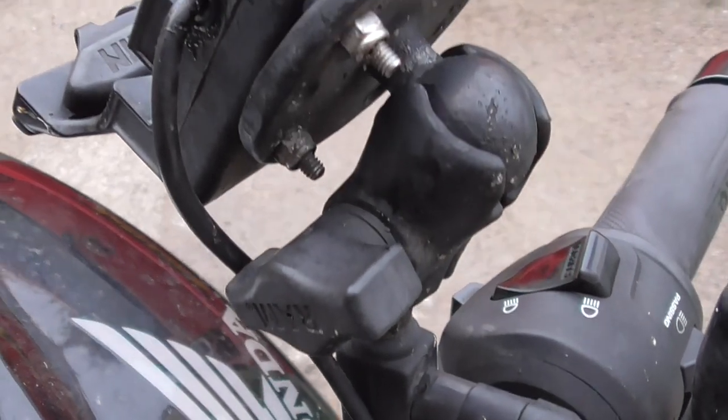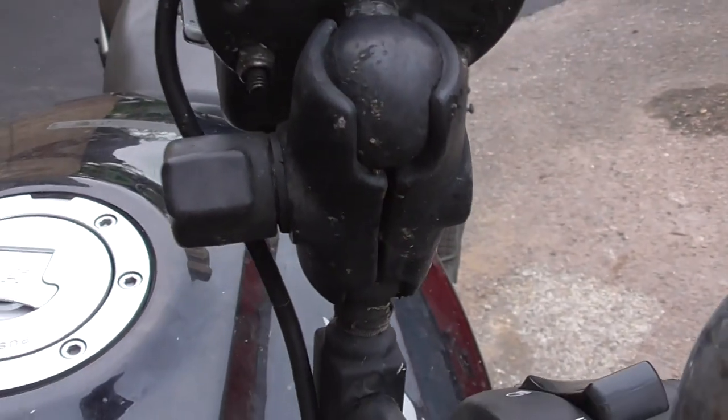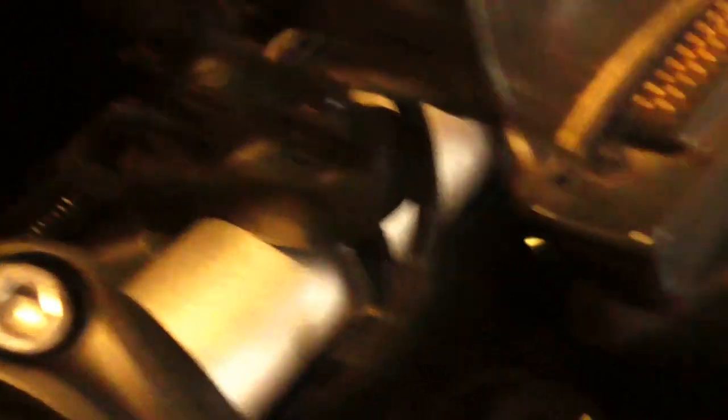And here you can see an example of one of the ram mounts on my 900 Hornet mounted on the mirror fixing points and on my 900 Tracer mounted using a clamp fixing.